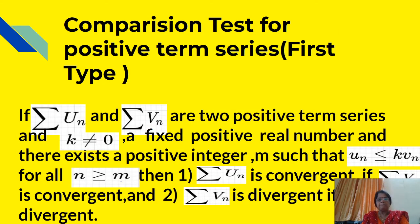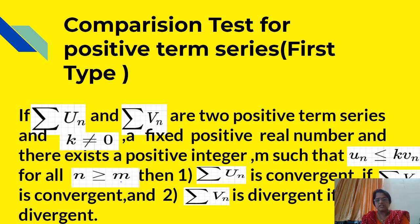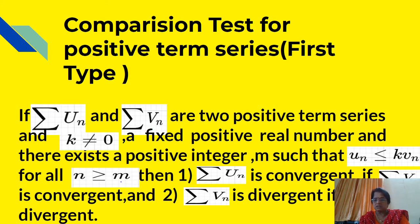Now we will see the comparison test for positive term series, Type 1: If Σun and Σvn are two positive term series, k ≠ 0 is a fixed positive real number, and there exists a positive integer m such that un ≤ k·vn for all n > m, then Σun is convergent if Σvn is convergent, and Σvn is divergent if Σun is divergent.